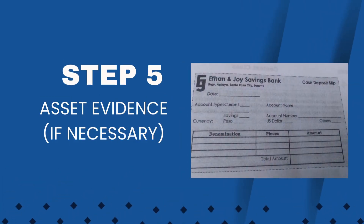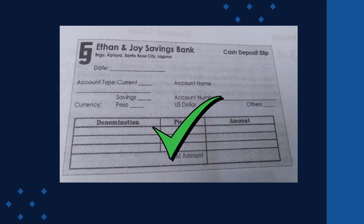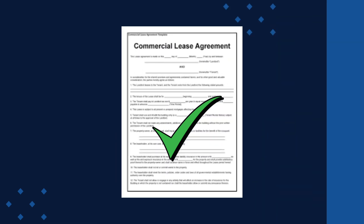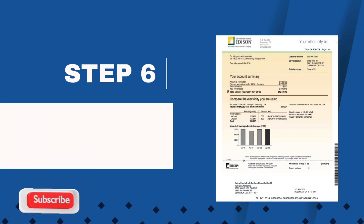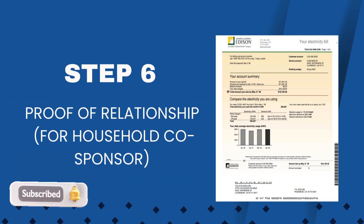Step five: Assets evidence, if necessary. If the joint sponsor's income doesn't meet the federal poverty guidelines, they can use assets to make up the difference. Acceptable assets include savings accounts, property, investments, or other forms of capital. You will need to upload evidence such as bank statements, property appraisals, or investment statements showing the current value of these assets. The assets must equal at least five times the shortfall in income.